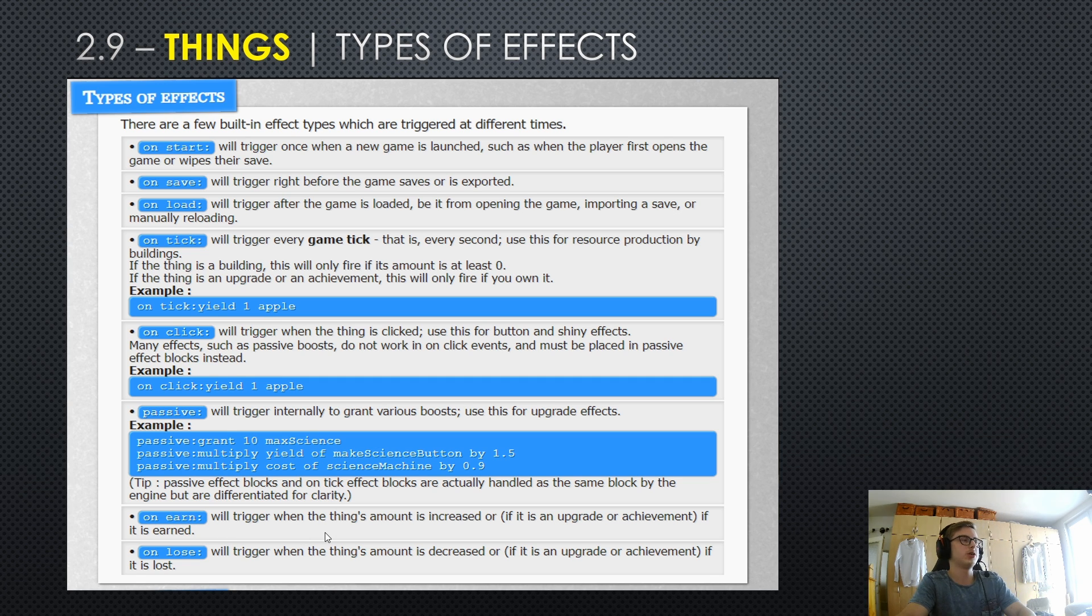OnEarn will trigger if the things amount is increased or, if it is an upgrade or an achievement, if it is earned. And onLose is basically the inverse of that, will trigger if the things amount is decreased or if it is an upgrade or achievement if it is lost.